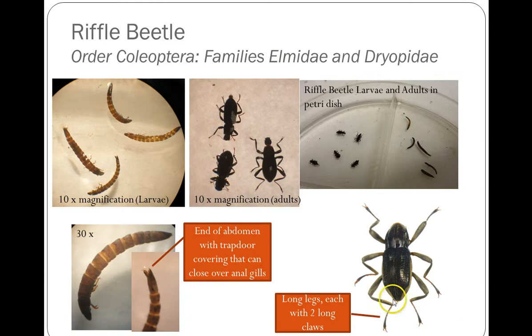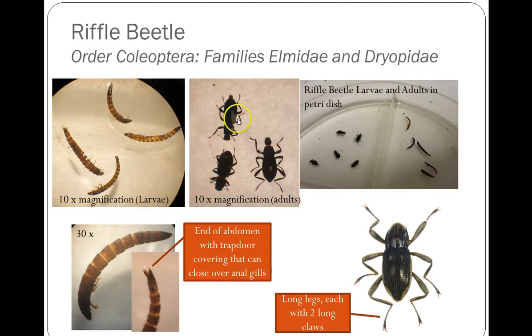For the adult, another good characteristic to look at is the split claw — really long legs and the split claw on the end. That is the Riffle beetle, and that body shape is a pretty good indicator too.